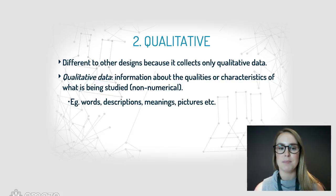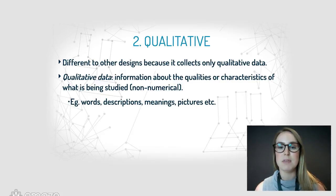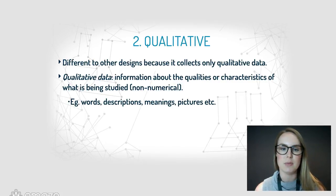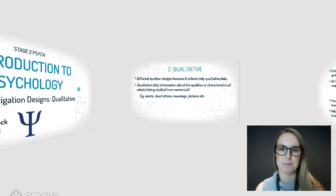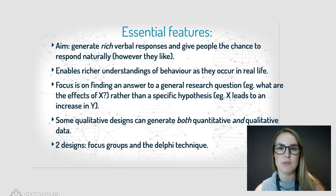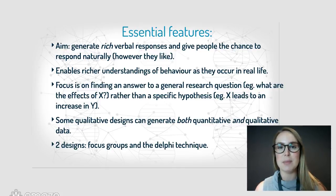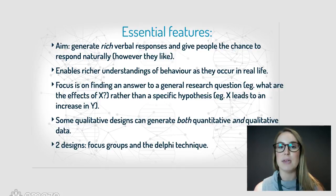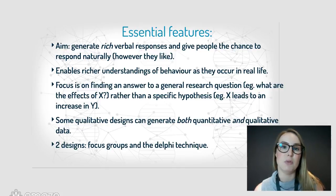Qualitative data is information about the quality of information — so we're not looking at numbers, we're looking at words and non-numerical data. It could be words, descriptions, meanings, pictures, explanations, etc. The essential features of the qualitative design: its overall aim is to really generate rich data and to give participants the chance to speak freely, fully explain what they mean, and explore ideas more fully.